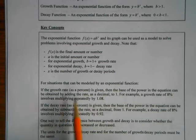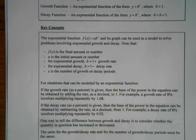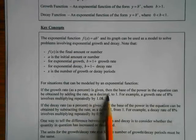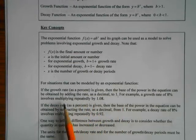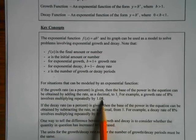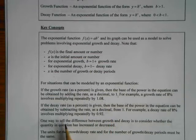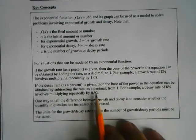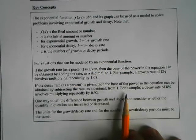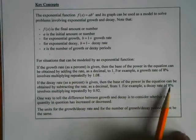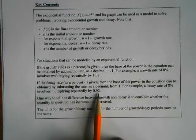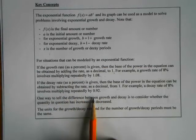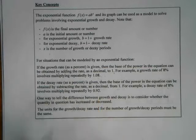To summarize: if the growth rate as a percent is given, the base can be obtained by adding the rate as a decimal to 1. For example, a growth rate of 8% involves multiplying repeatedly by 1.08. If the decay rate as a percent is given, the base is obtained by subtracting the rate as a decimal from 1. For example, a decay rate of 8% means you're keeping 92%, so your base is 0.92.